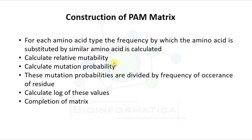So far we have learnt how to construct the PAM matrix. First, for each amino acid type, the frequency by which an amino acid is substituted by a similar amino acid was calculated. Then relative mutability was calculated. Then mutation probabilities were calculated. These mutation probabilities are divided by the frequency of occurrence of residues. Then the log odds are calculated by taking the log of these values. Then the matrix is completed.